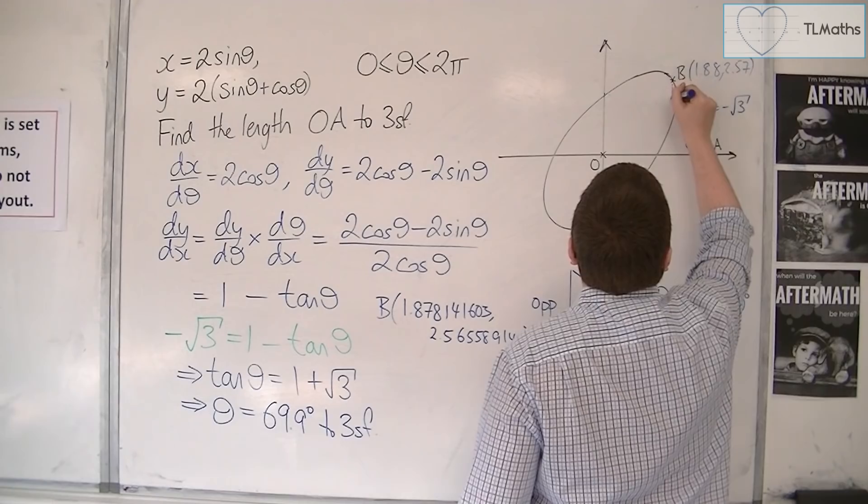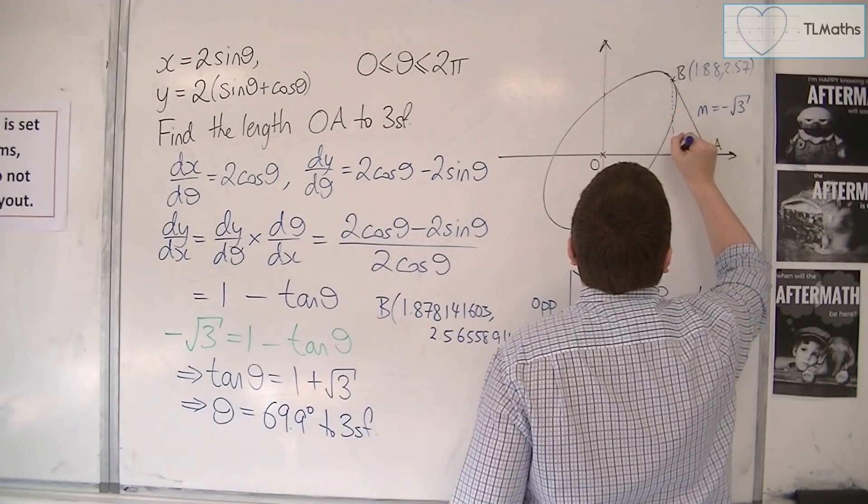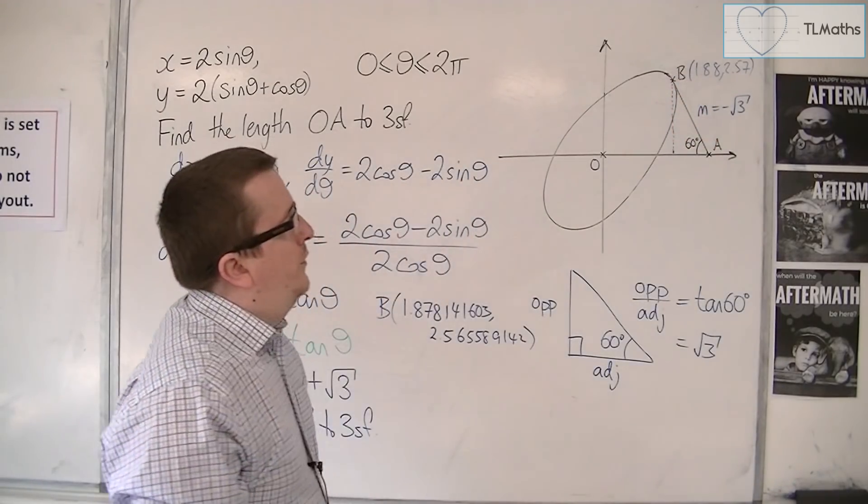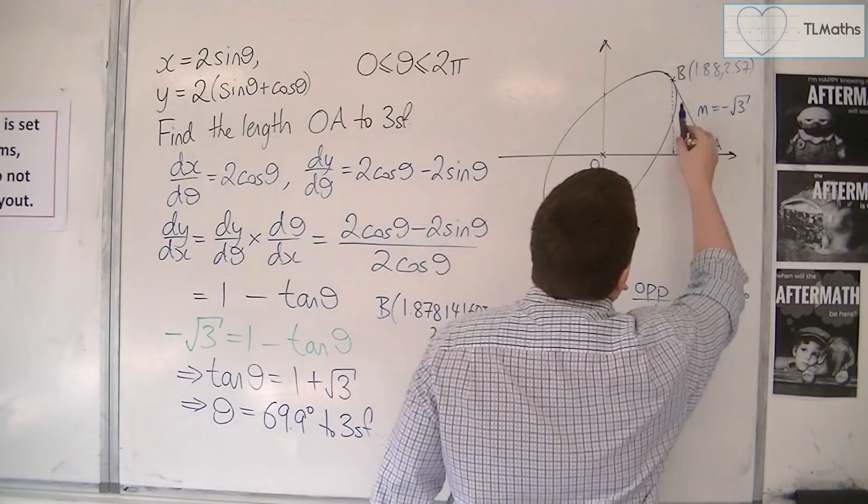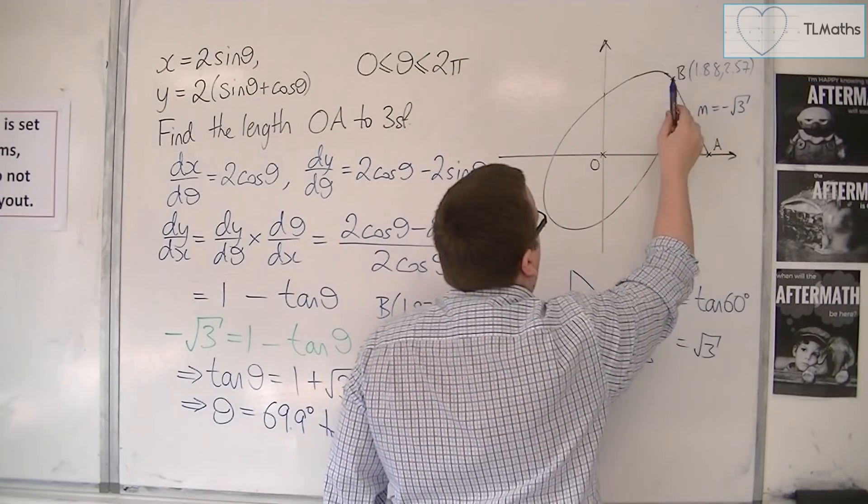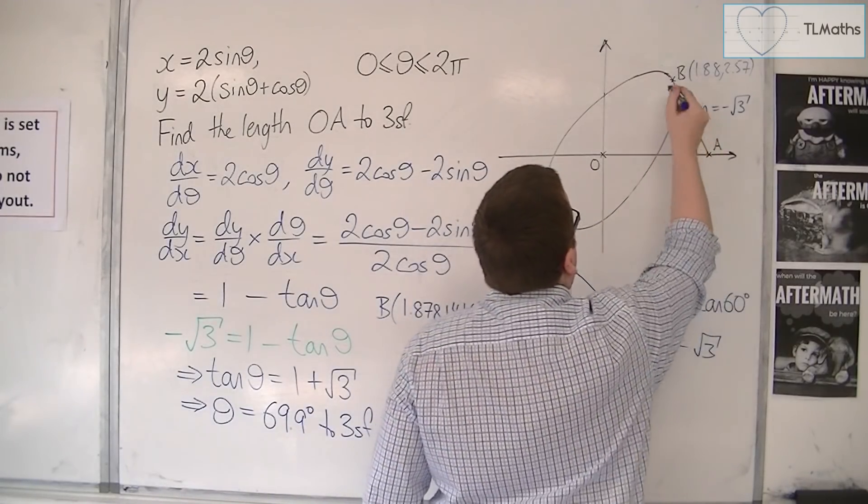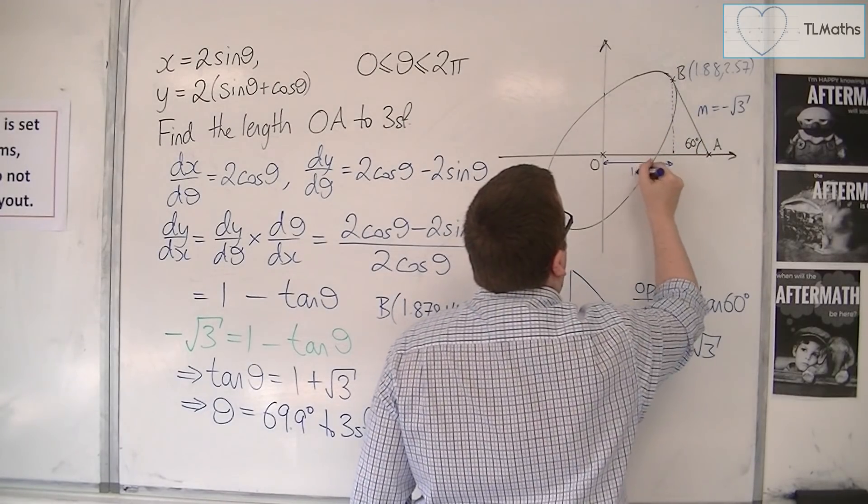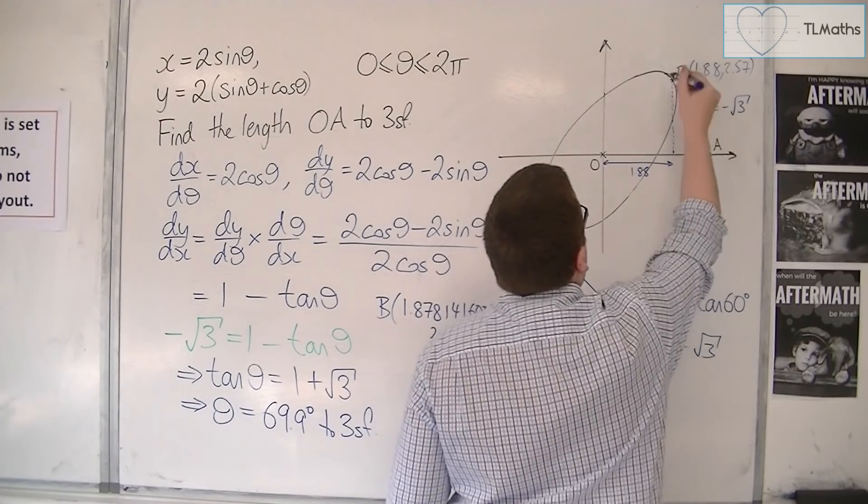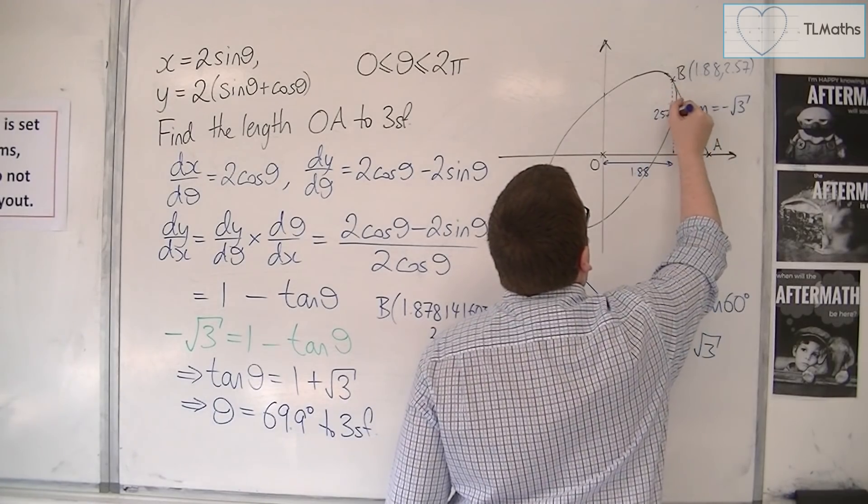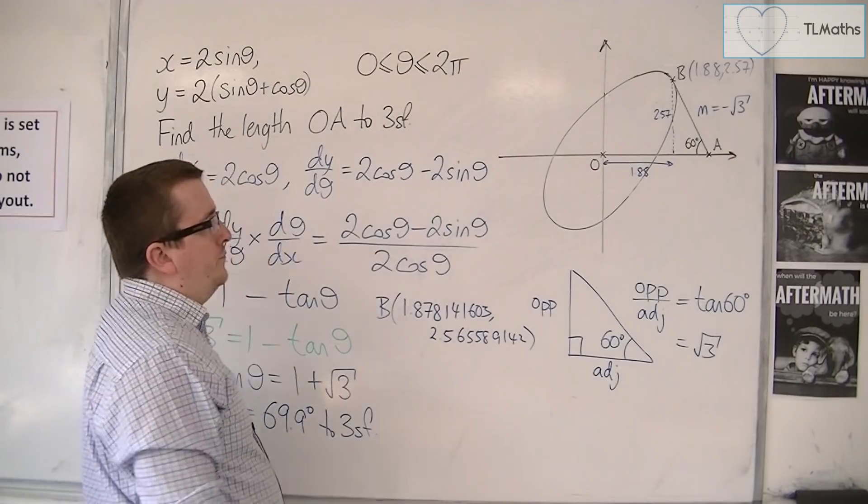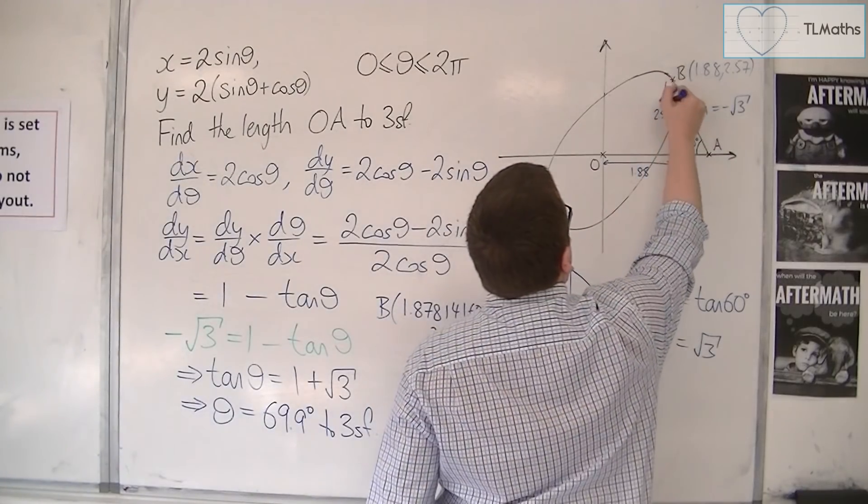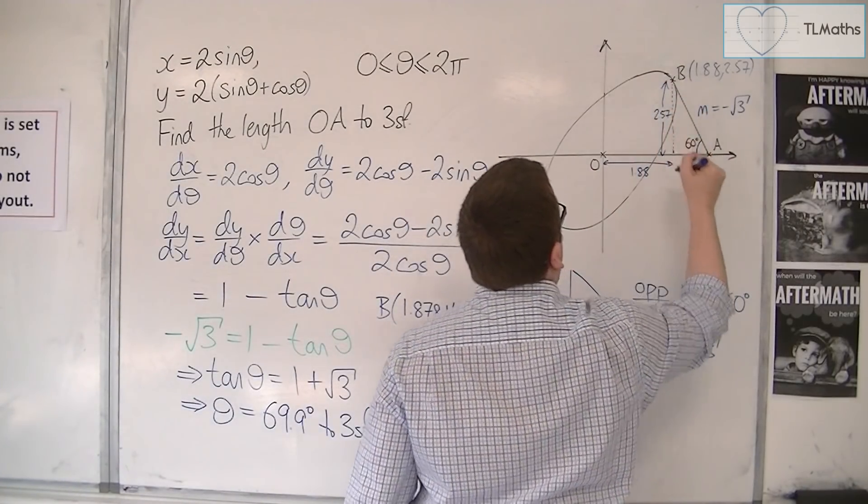Now I still haven't worked out what OA is. If I drop a line down, then I can now say that this distance is 1.88 and I know that height is 2.57.